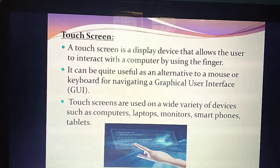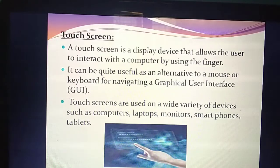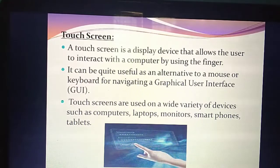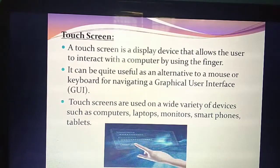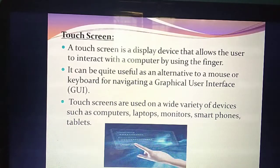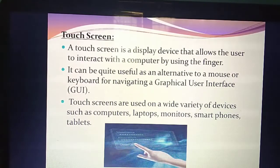Next is touch screen. You are already familiar with it. See this diagram — this is the touch screen diagram. Microphone is a voice input device; camera is a device for capturing images or videos. Touch screen is a display device. What's the use of this touch screen? It will allow the user to interact with the computer or mobile phone. Using which part? Your finger. Finger is the major part of using this touch screen.